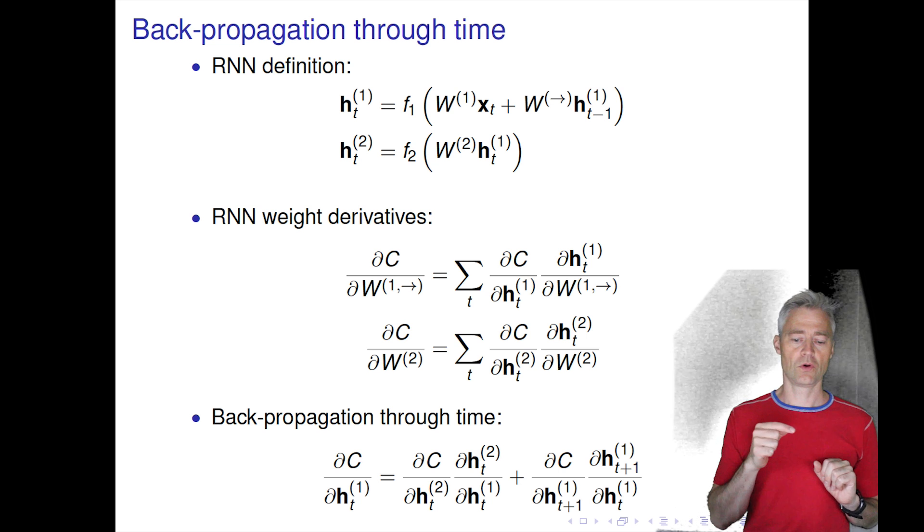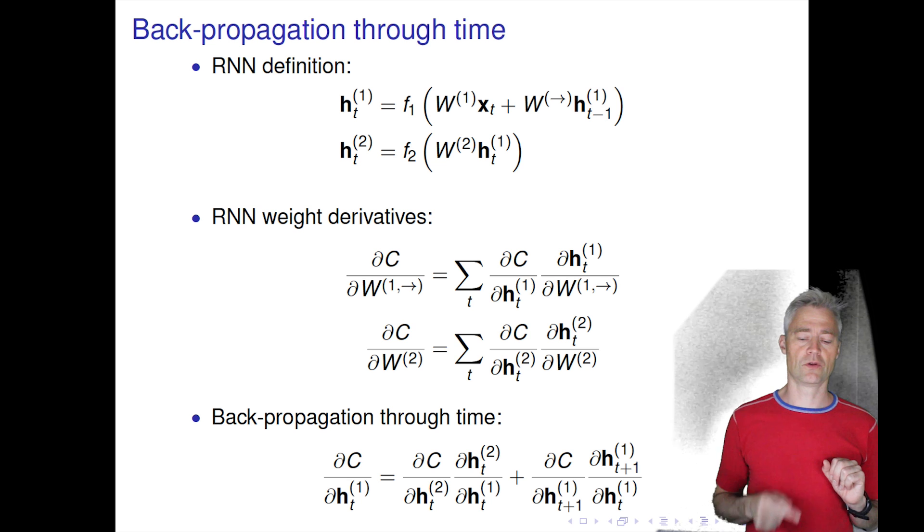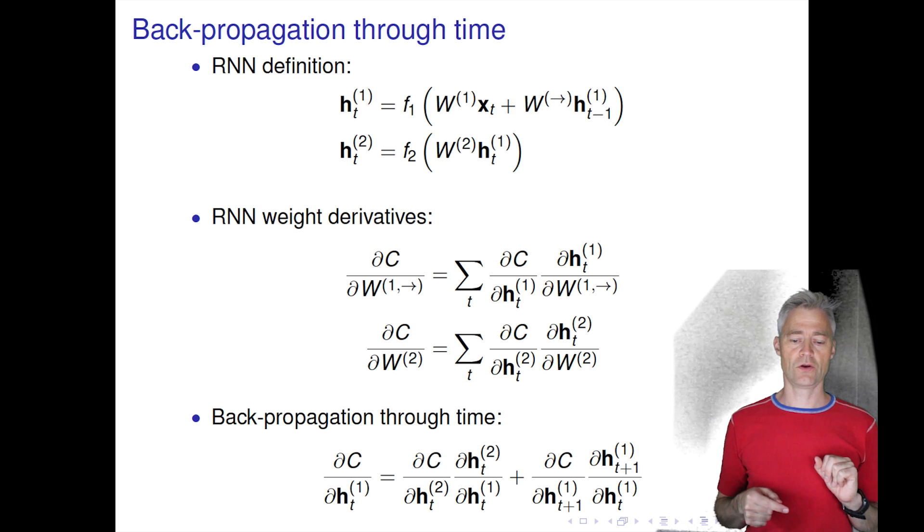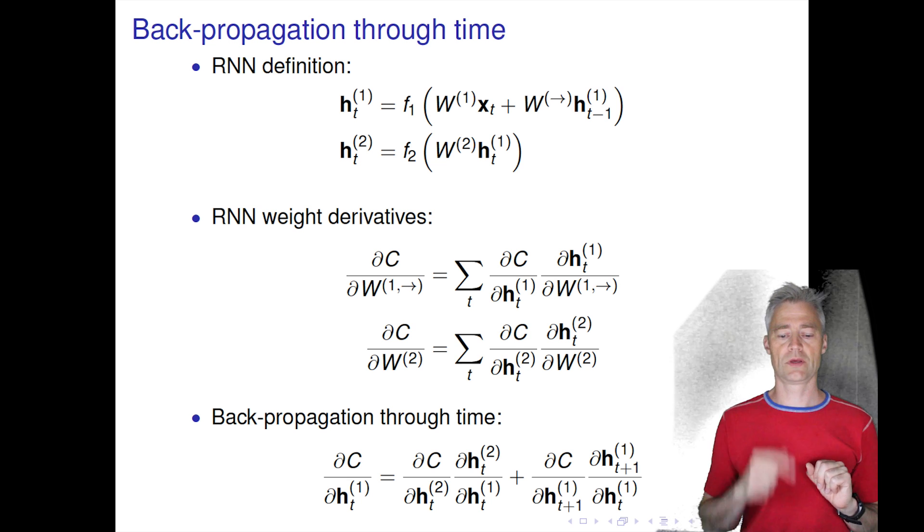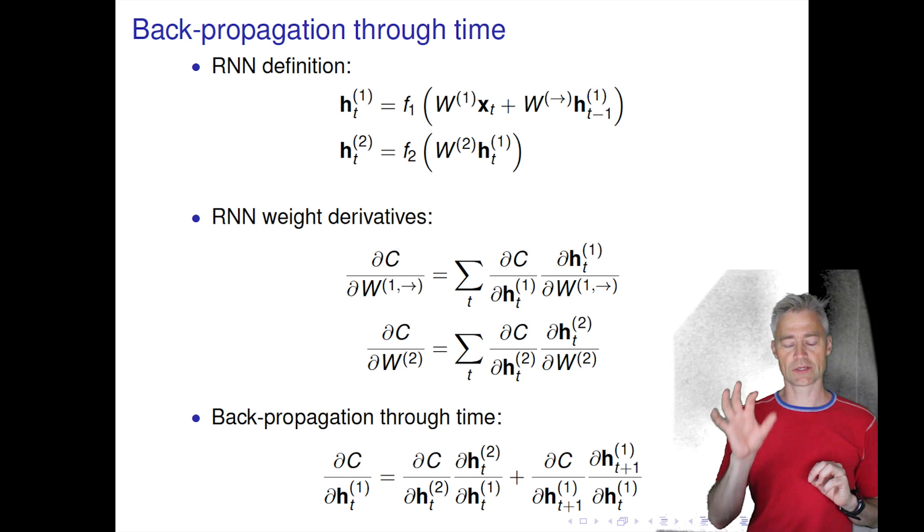We go through the cost function's dependence on the second layer at the same time point, and we take the normal chain rule. But then notice the second term.